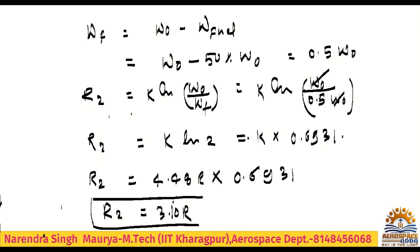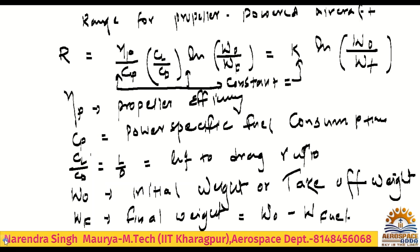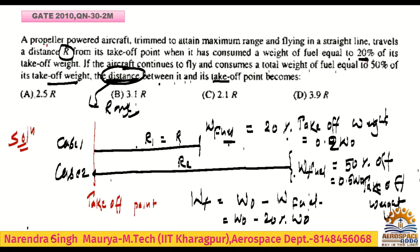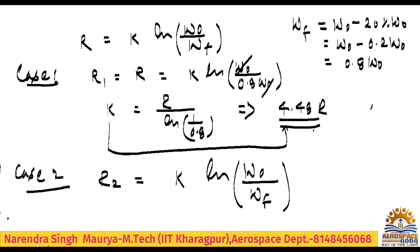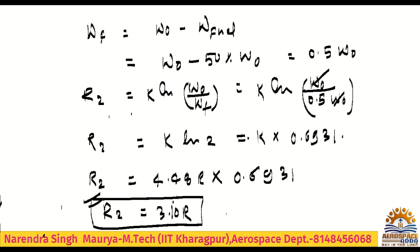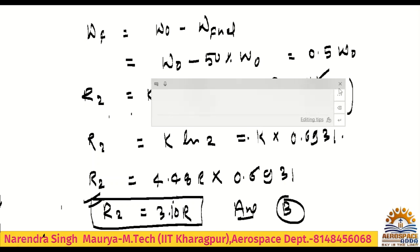Checking the options: 2.5R is wrong, 3.1R is correct, 2.1R is wrong. We are getting exactly 3.10R. The correct answer is option B. Hope you all understand.